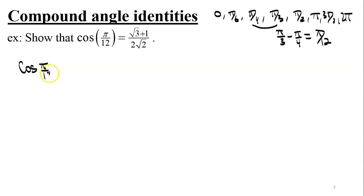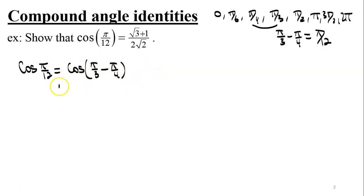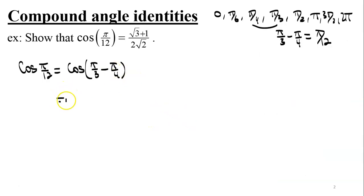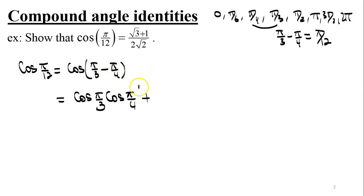So cosine of pi over 12 can be written as cosine of pi over 3 minus pi over 4. Applying the compound angle identity cosine of a minus b equals cosine a cosine b plus sine a sine b, we get cosine of pi over 3 times cosine of pi over 4 plus sine of pi over 3 times sine of pi over 4 — since it's a subtraction, the identity gives the opposite sign, a plus.